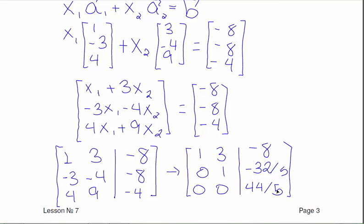So we can see that this does not have a solution. And since it doesn't have a solution, no, b cannot be written as a linear combination of a1 and a2.